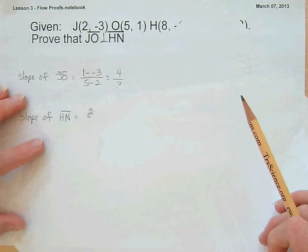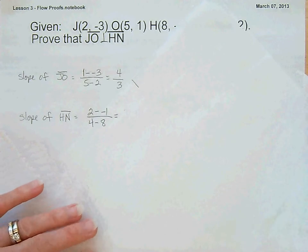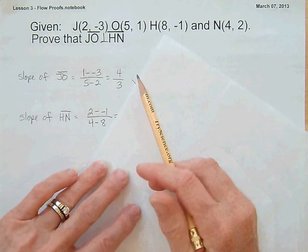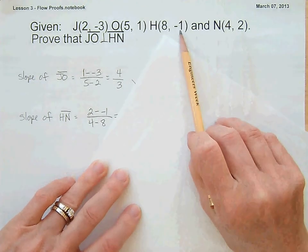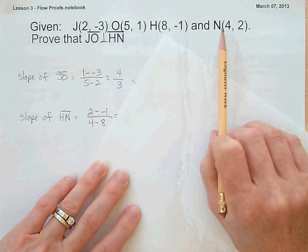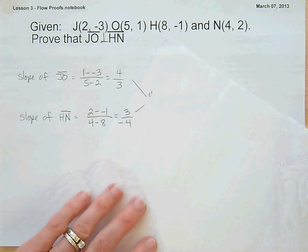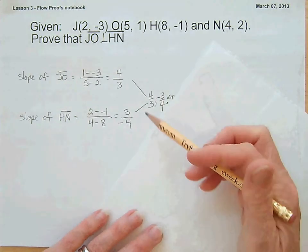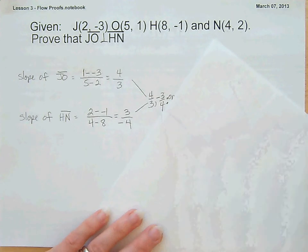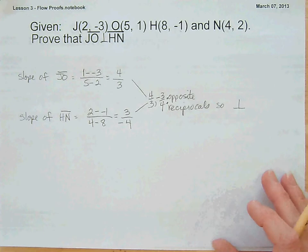Now the slope of HN is 2 minus negative 1, that's 2 plus 1, over 4 minus 8. So that's 3 over negative 4. And sure enough, 4 thirds and negative 3 fourths are opposite reciprocals. Therefore, we can say that those two segments are perpendicular.